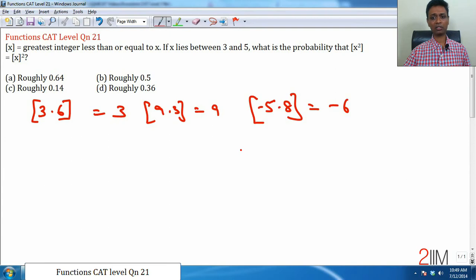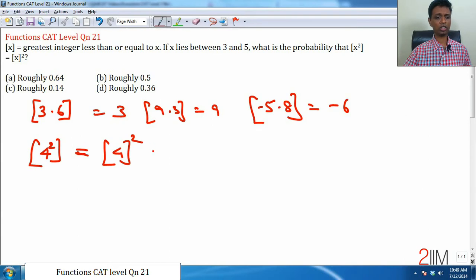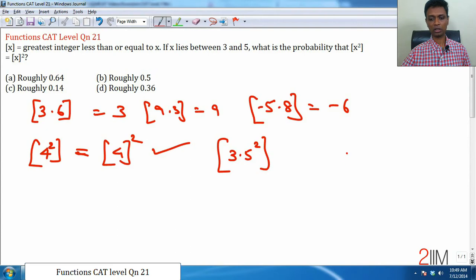X lies between 3 and 5, what is the probability that greatest integer of x square is equal to greatest integer of x the whole square? Let us take a bunch of values. Let us take greatest integer of say 4, 4 square, the greatest integer of 4 the whole square. Is this true? 16, 16, this works.